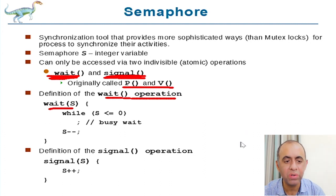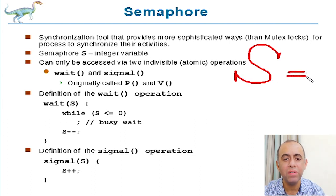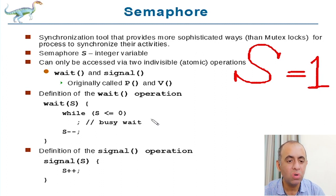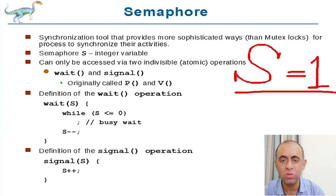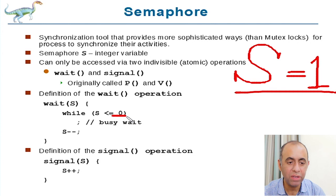So first what we're going to do, instead of a lock, we are going to define a variable S which will be the semaphore S, which can have different values. There can be different initial values — for example, it has an initial value of 1, representing the number of resources. Wait on S means that whenever a process is trying to go into the critical section, it calls the wait function and checks whether the value of S is less than or equal to zero. If the value is zero or less than zero, it waits.